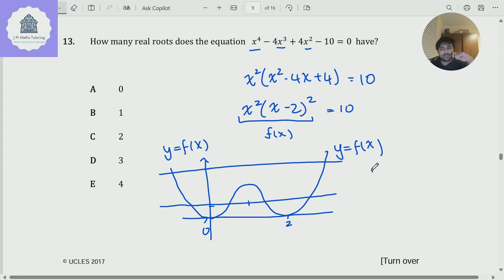And in order to do that, I need to differentiate f of x. So f prime of x, well, f of x is just this thing here. So that'll be 4x cubed minus 12x squared plus 8x. And we set that to 0. So taking out a factor of 4x, I'm going to get x squared minus 3x plus 2 equals 0. So 4x times x minus 1, x minus 2 equals 0.